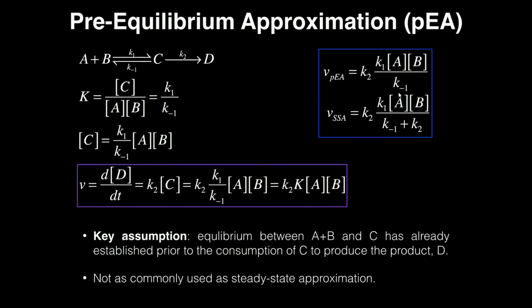So the steady state approximation takes into account the fact that equilibrium may not be established prior to the consumption of C to form D. And so it has to take into account the fact that there is some consumption of C prior to equilibrium, which is why you see this K2 in the denominator expression for steady state approximation.